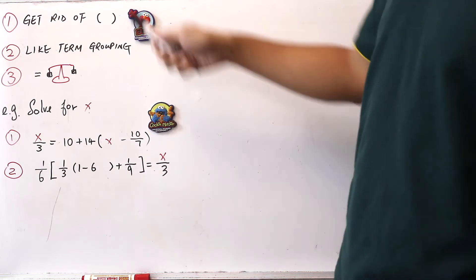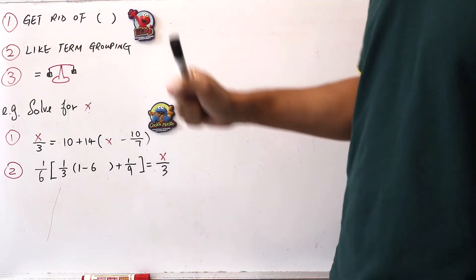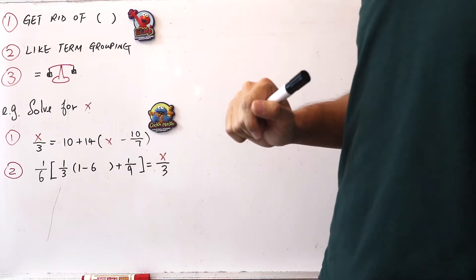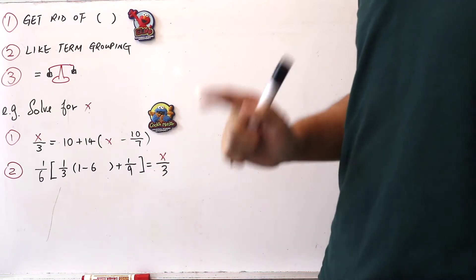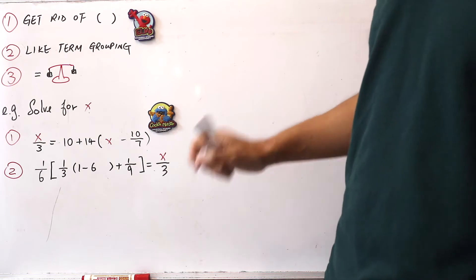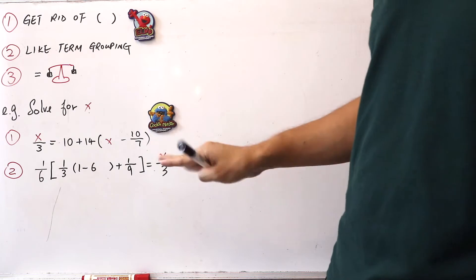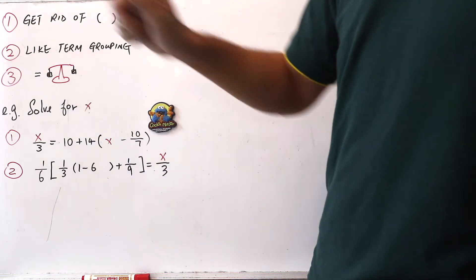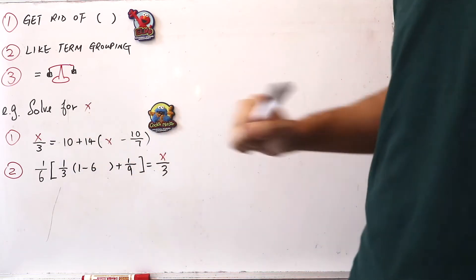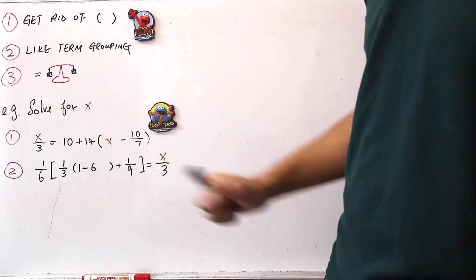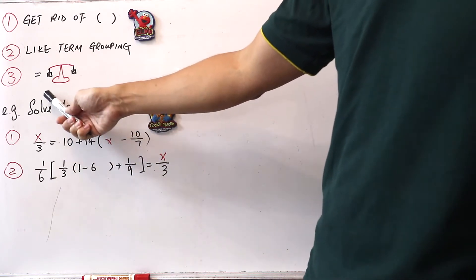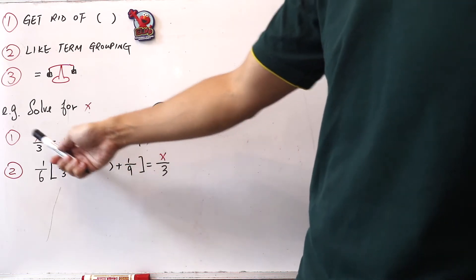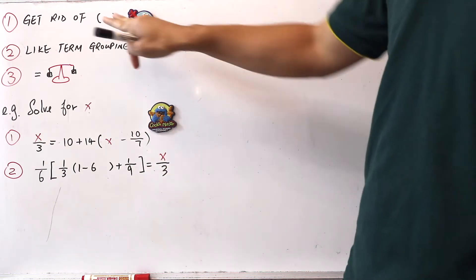All you need to remember are three highlights. Highlight number one: get rid of the brackets as soon as possible. Highlight number two: like-term grouping — group the unknowns together and group the constants together, since this chapter involves only one unknown, x. Highlight number three: treat the equal sign as a weighing scale — whatever you do on the left-hand side, you must do the same on the right-hand side.